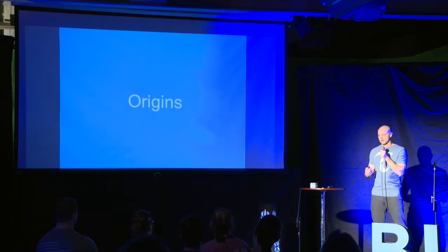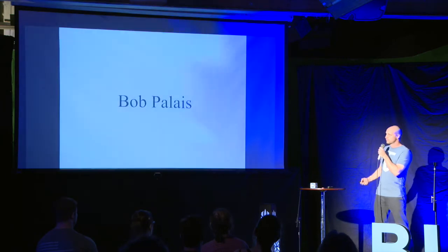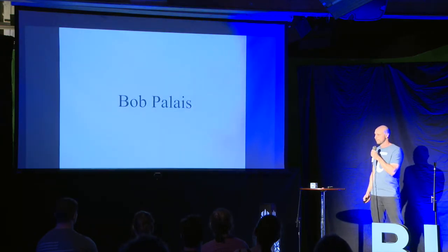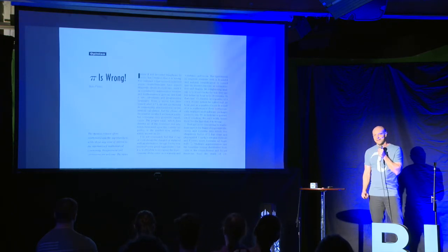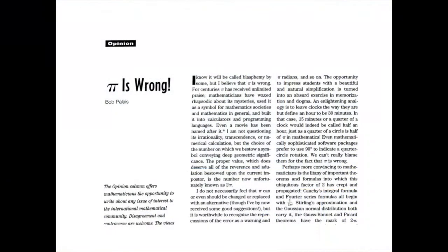The first person in the modern era to notice this problem that I know of is a mathematician named Bob Palais at the University of Utah. In 2001, he published an article called 'Pi is Wrong.' By that rather provocative title, he didn't mean that pi is factually incorrect, but merely that pi is confusing and unnatural. I read this shortly after it was published and was pretty much convinced right away. Palais introduced this idea of c over r being one turn — like a full turn of a circle — but he didn't really give it a name, and he proposed a symbol that didn't really catch on.